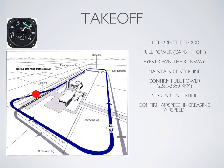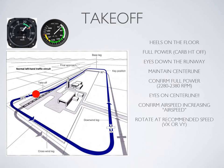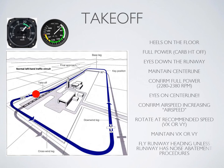Keep your eyes on the center line, then glance at your airspeed indicator to confirm airspeed is increasing — this is your go/no-go point. If you're not happy with the takeoff, now is the time to reject. If airspeed is increasing, wait until you've hit your recommended Vx or Vy speed, then rotate and maintain Vx or Vy in the climb out. Fly your runway heading unless the runway has a noise abatement procedure.